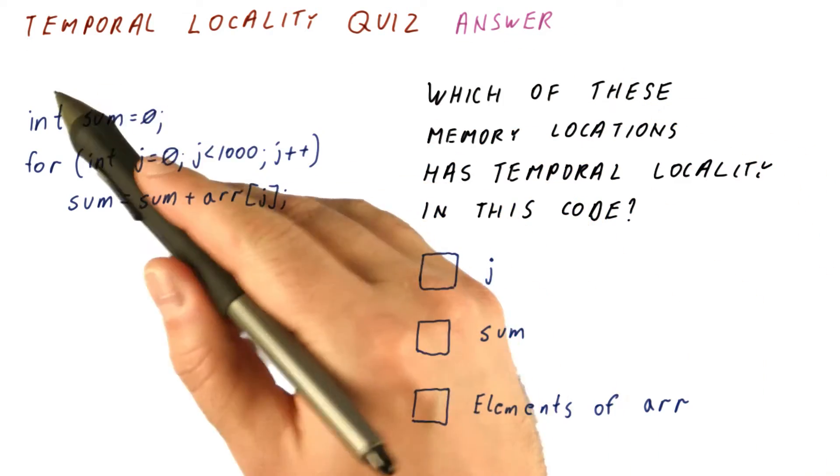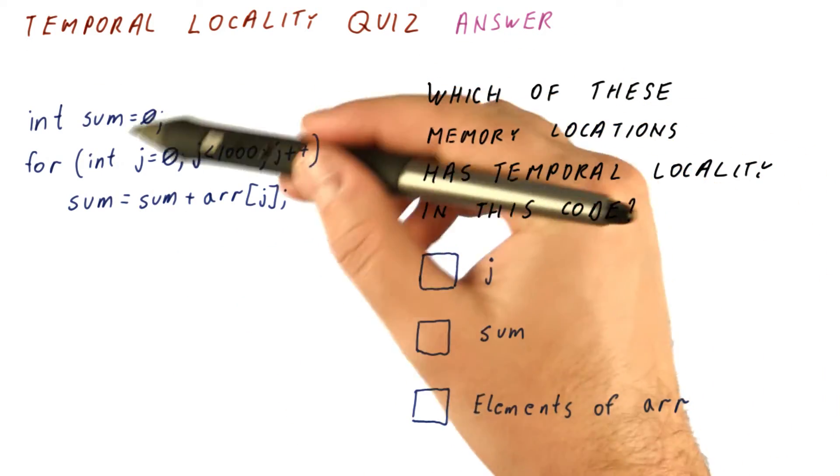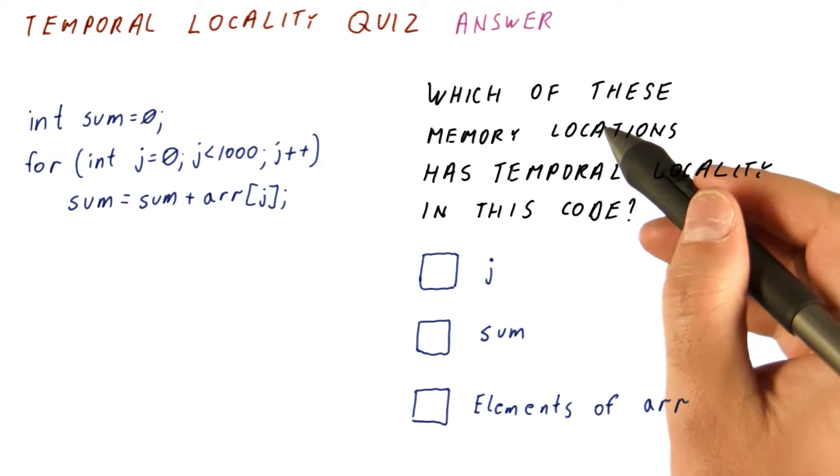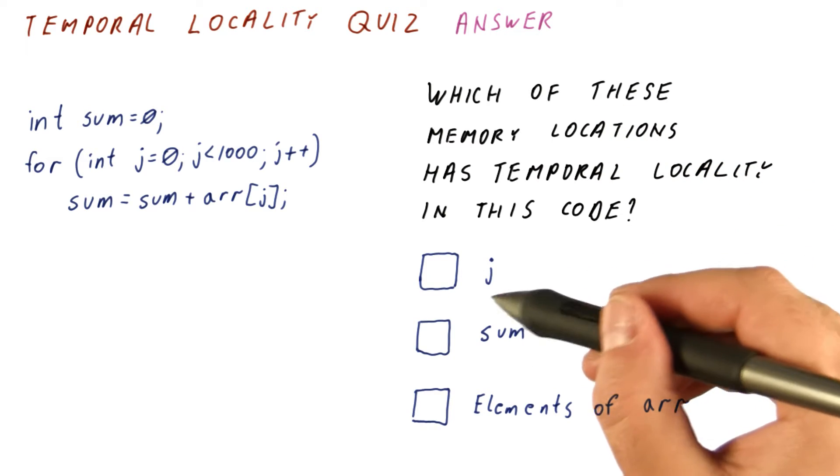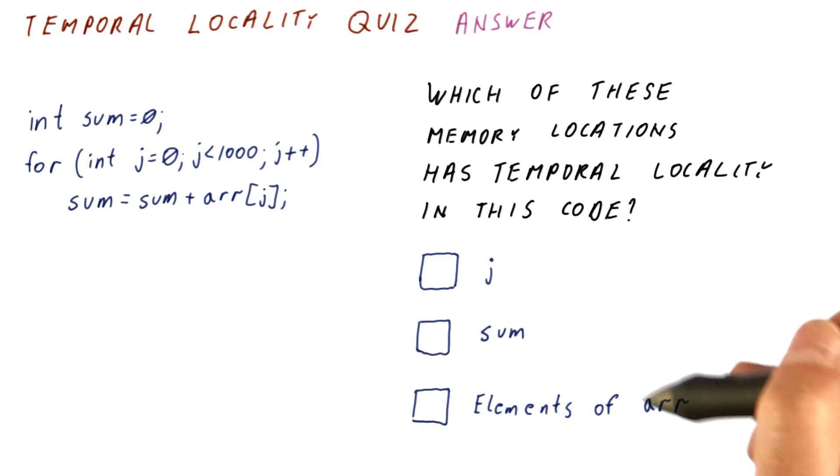Let's look at the answer to our temporal locality quiz. In this code, the question was which of these memory locations have temporal locality, and the choices were j, sum, and the elements of arr.